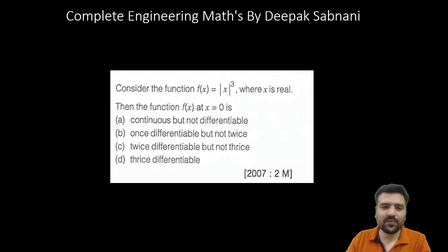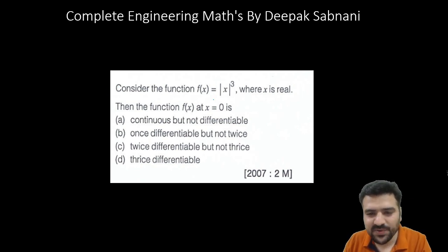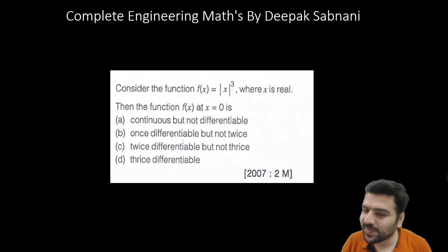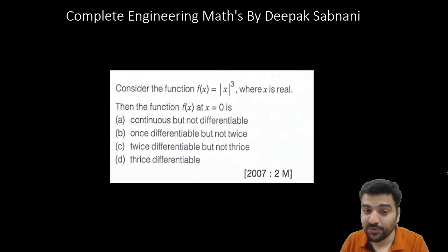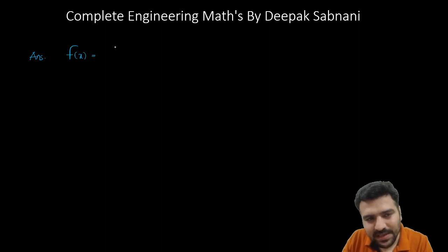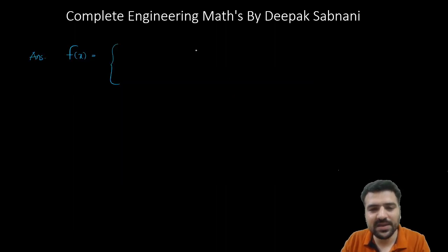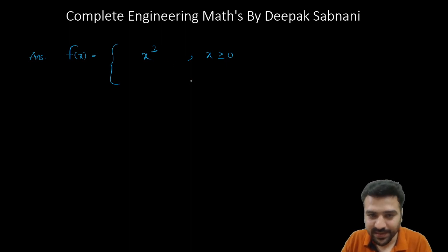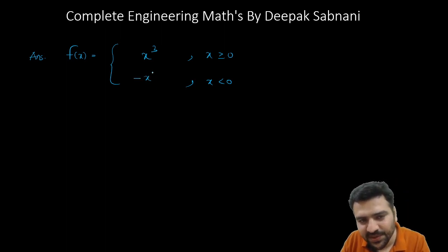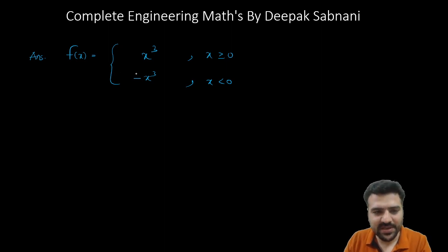One more question: consider the function f(x) = |x³| where x is real. At x = 0, is f(x) continuous and differentiable, once differentiable but not twice, twice differentiable but not thrice, or thrice differentiable? We write this as a piecewise function: f(x) = x³ when x ≥ 0, and f(x) = -x³ when x < 0, since |x| equals x for positive input and -x for negative input.